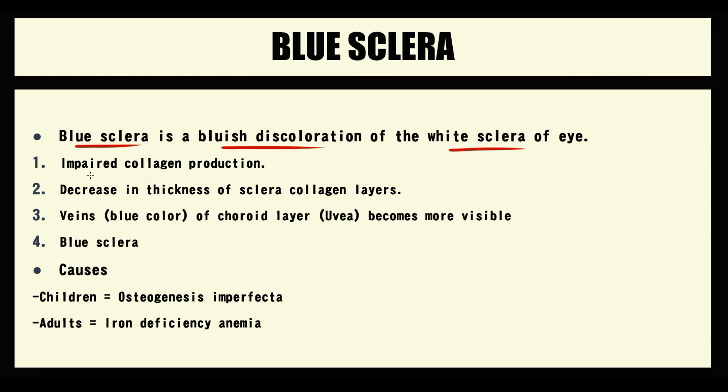Initially, some factors disrupt normal production of collagen. Without collagen, the thickness of sclera decreases. Because sclera becomes more transparent, now veins of choroid layer become more visible. And exactly this blue color of choroid layer gives sclera a bluish tint.